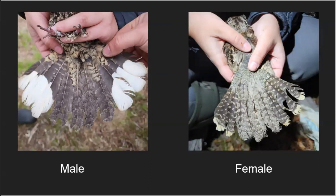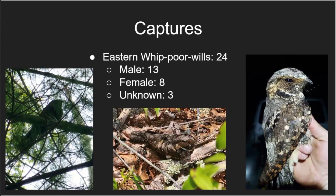We also determine whether they're male or female — they have pretty distinctive plumage differences, although you wouldn't see them if they were just roosting. Males have extensive white patterns on their outer three tail feathers and sides, which are striking especially at night with that big flash of white. Females have a dull, yellowish-white small band at the tips of their feathers. In total, we captured 24 individuals: 13 males, 8 females, and 3 unknown — juveniles missing their tail feathers so we couldn't identify their sex.